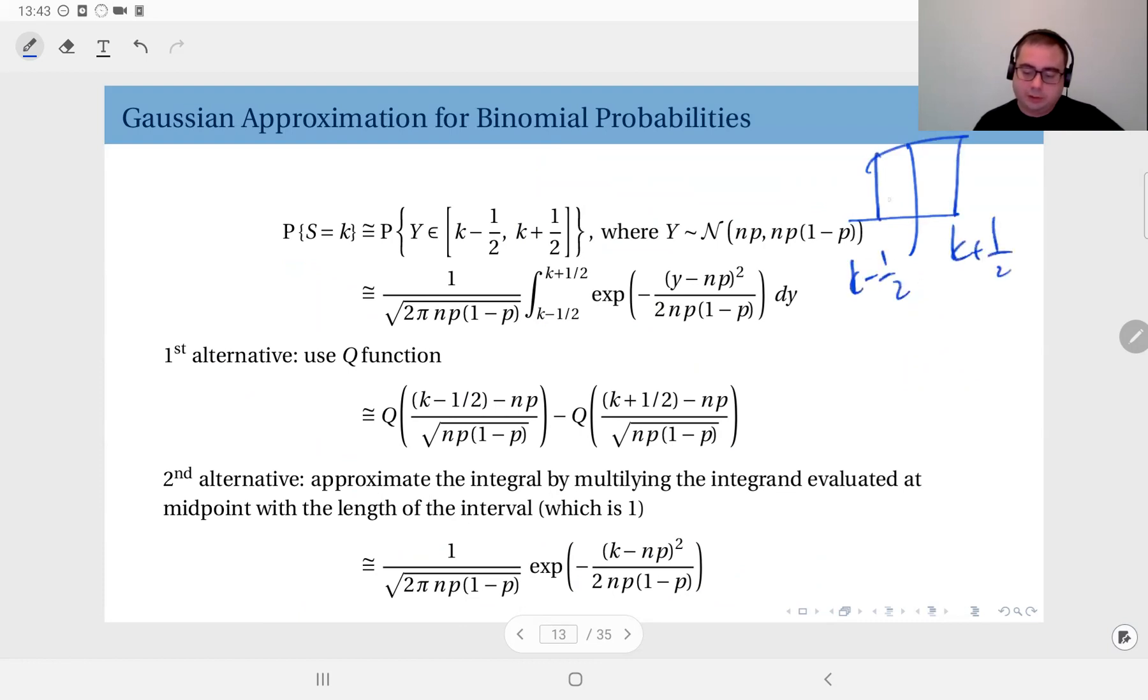If this is the setting here, k minus one half, k plus one half, so first subtract the Q function at this point from the Q function at this point, right, which will give you this area. This is the first alternative.